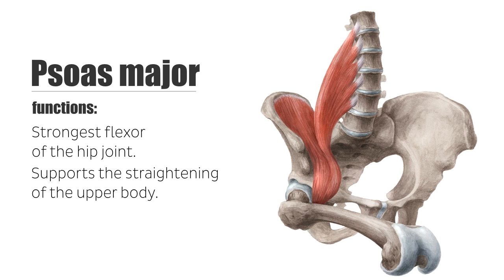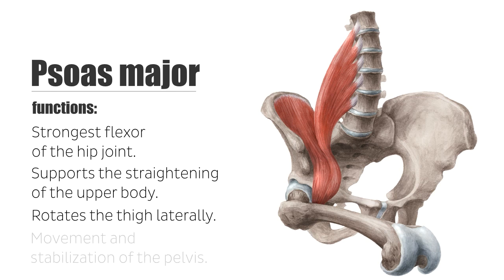Furthermore, it rotates the thigh laterally. A unilateral contraction leads to a lateral flexion of the lumbar vertebral column. Altogether, the iliopsoas muscle plays a significant role in the movement and stabilization of the pelvis.